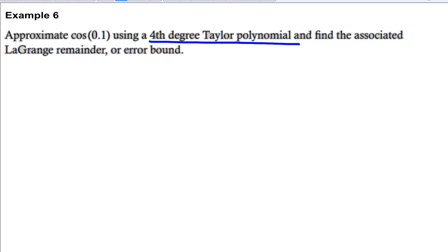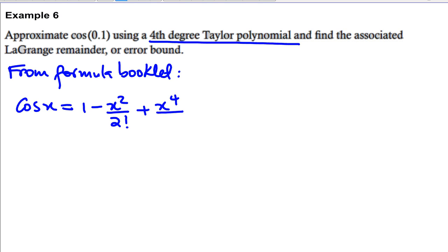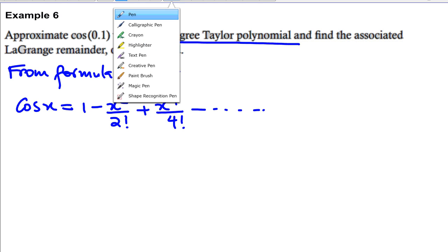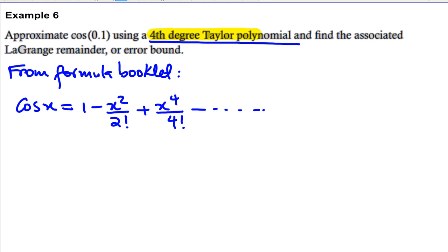So from formula booklet, cos x is equal to 1 minus x squared over 2 factorial plus x to the power 4 over 4 factorial minus whatever comes next. Remember, what you are interested here is just up to the fourth degree polynomial. So that's why I stopped at that point.